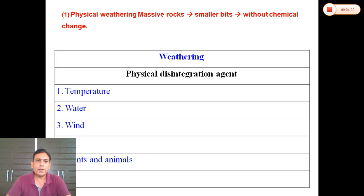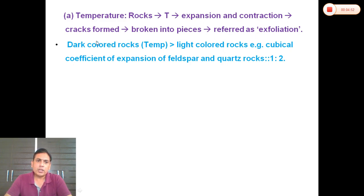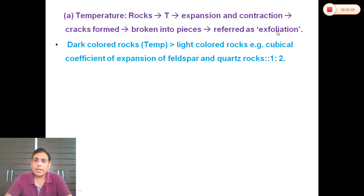Physical weathering involves the breaking down of rocks and minerals into smaller pieces without any chemical changes. The agents include temperature, water, wind, ice, plants, and animals. Regarding temperature: when temperature increases and decreases, expansion and contraction take place. Due to this expansion and contraction, cracks form on the surface of and between rocks. As these cracks increase, the rock breaks down into pieces — this is called exfoliation.